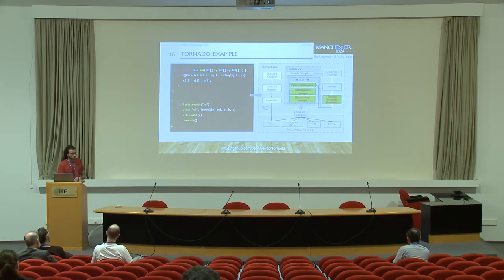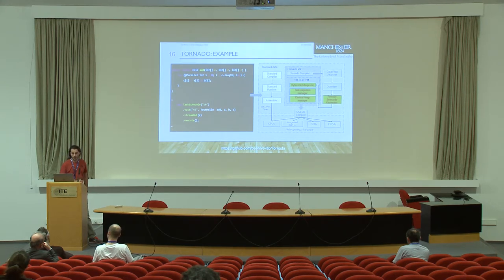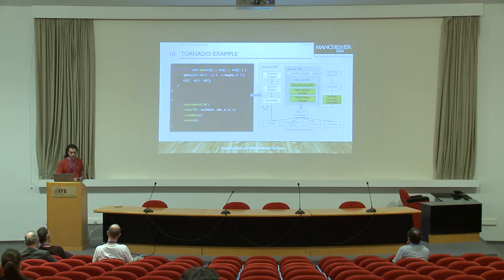When the VM picks a CUDA device, Tornado VM compiles from the internal bytecode to OpenCL, and then uses OpenCL compilers to translate to machine code for the respective device. There are some limitations — for instance, we cannot support exceptions right now — but you can do a lot, especially when it comes to pure computation.